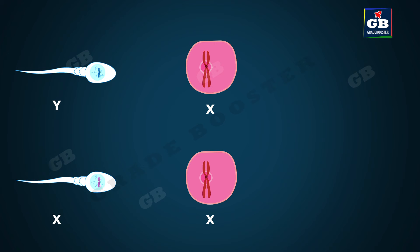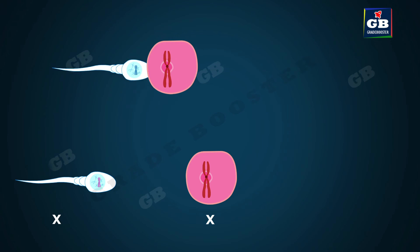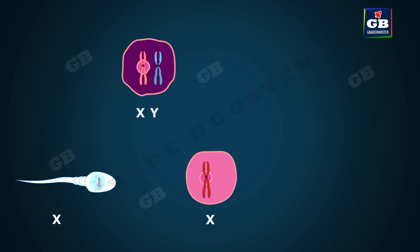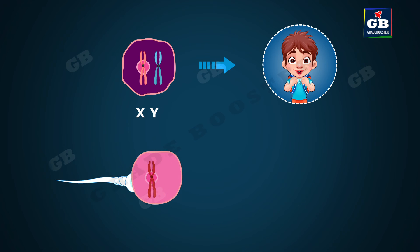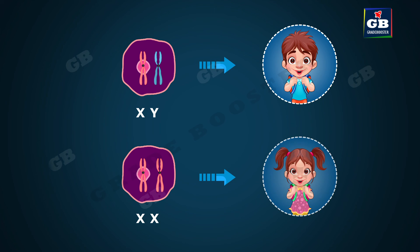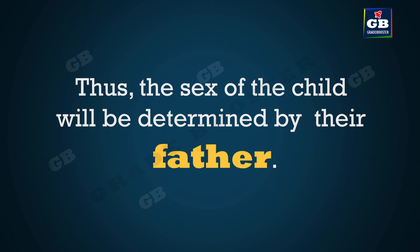If a sperm with a Y sex chromosome fuses with an egg cell, it develops into a baby with XY sex chromosomes — which means a boy child. If a sperm with an X sex chromosome fuses with an egg cell, it develops into a baby with XX sex chromosomes — which means a girl child.